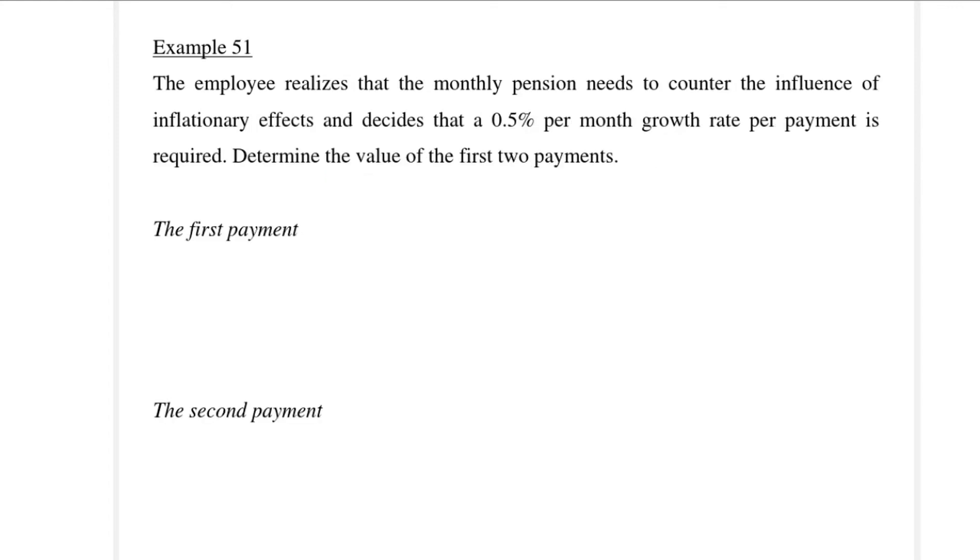Example 51 is then an extension of example 50. The employee realizes that the monthly pension needs to counter the influence of inflation and decides that a 0.5% per month growth rate per payment is required. Determine the value of the first two payments. So this is now a growing perpetuity. The formula for a growing perpetuity is present value equal to payment over I M minus G. Again we have the present value, we have the interest rate and we have the growth rate. So we would like to get payment.